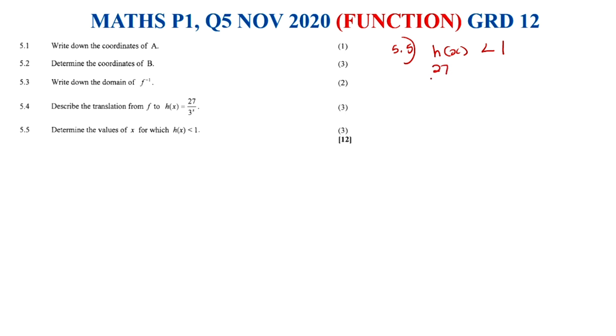Alright, good stuff. Question 5.5. It was 27 over 3 to the power of x as given, less than 1. So if you were to cross-multiply, let's go ahead and cross-multiply this. We are going to have 27 less than 3 to the power of x. Therefore this is 3 to the power of 3 less than 3 to the power of x.